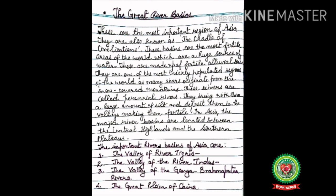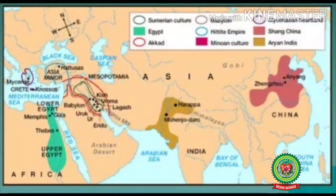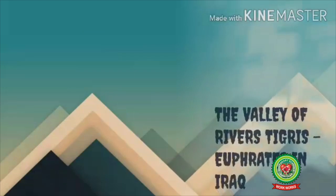There are four important civilizations of the world, and out of four, three are in Asia: number one, Mesopotamian civilization; number two, Indus Valley civilization; and number three, Chinese civilization. The important river basins of Asia include the following.